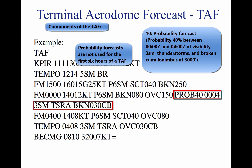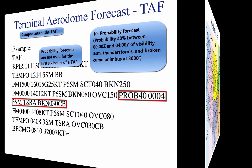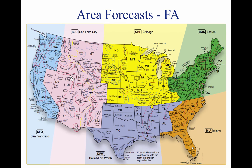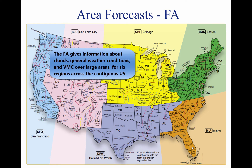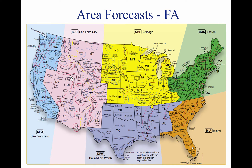The FA gives a picture of clouds, general weather conditions, and visual meteorological conditions (VMC) expected over a large area encompassing several states. There are six areas for which area forecasts are published in the contiguous 48 states. Area forecasts are issued three times a day and are valid for 18 hours.